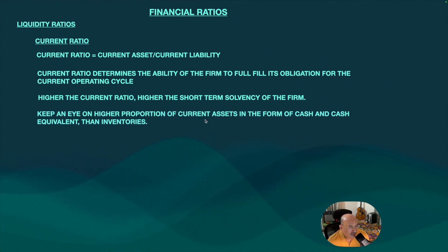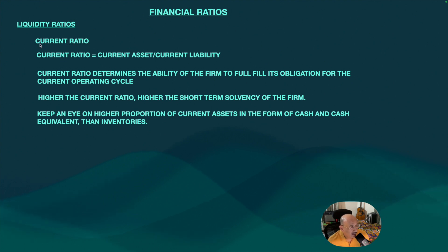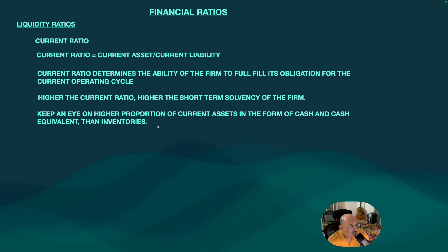Keep an eye on a higher proportion of current assets in the form of cash and cash equivalents versus inventories. If inventories form a major proportion of current ratio, it means there is not enough business and inventory is not being utilized in the short term — which does not give a good picture of the company's operating performance.